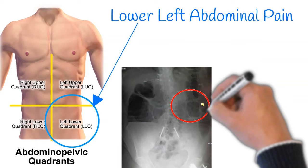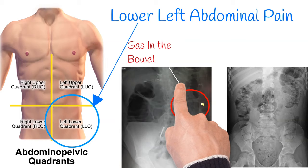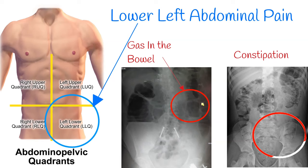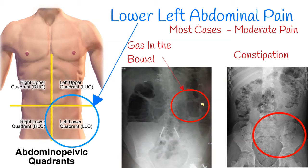The most common causes of lower left abdominal pain are gas in the intestines and constipation, and menstrual pain. In these cases, the pain is moderate and not very strong. Among the elderly, a common cause of lower left abdominal pain is diverticulitis.